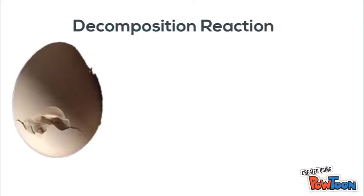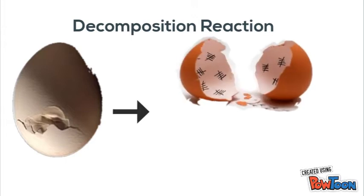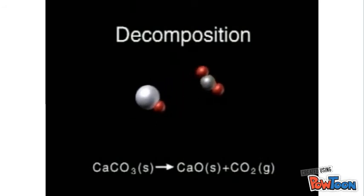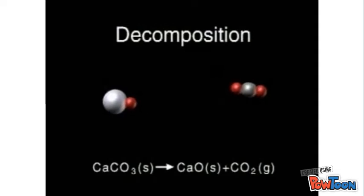An example of this is if we take an egg and we break it down into its parts, you have an empty egg shell plus a baby chicken. A chemical example is calcium carbonate breaking down into its components of calcium oxide and carbon dioxide.